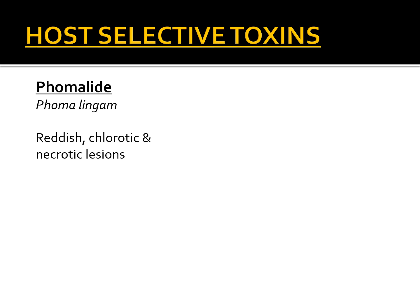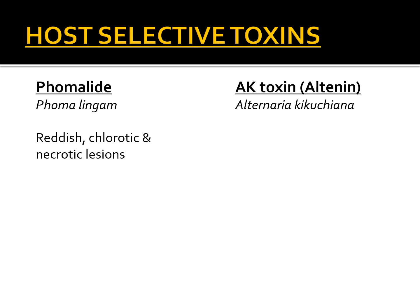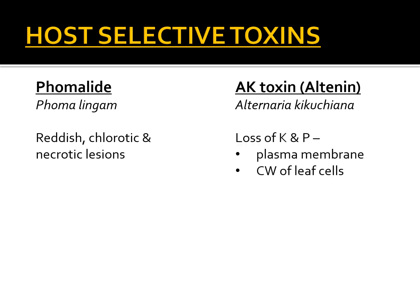The next host selective toxin is formalide, produced by the fungus Foma lingum, which causes black leg disease of Brassica crops. Though the mechanism of action of this toxin is unknown, it has been established that it causes necrotic lesions, chlorosis, and reddish lesions on the leaves of the plant. The next toxin is AK toxin, also called Altenin, produced by Alternaria kikuchiana, which causes black leaf spot disease in Asian pear. This toxin leads to loss of potassium and phosphorus from plant cells, causing destruction of the plasma membrane and degradation of cell walls.